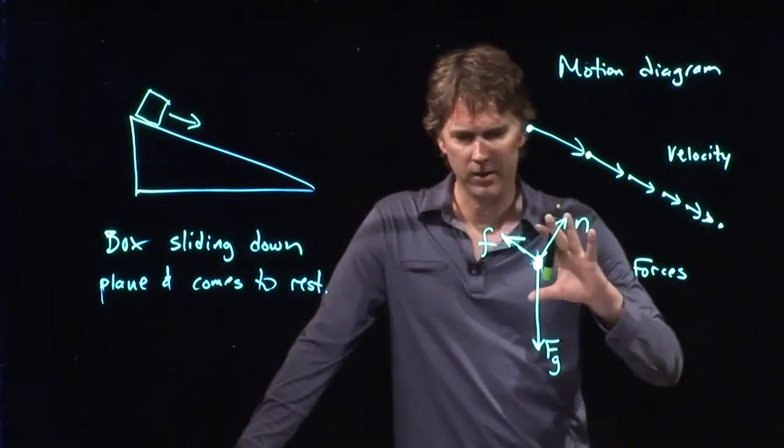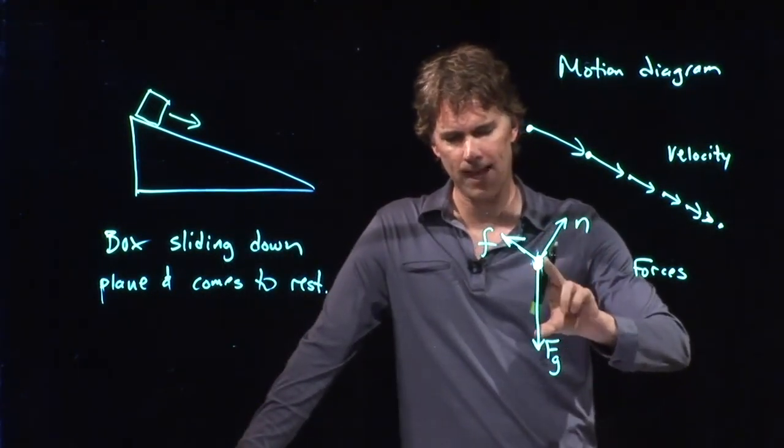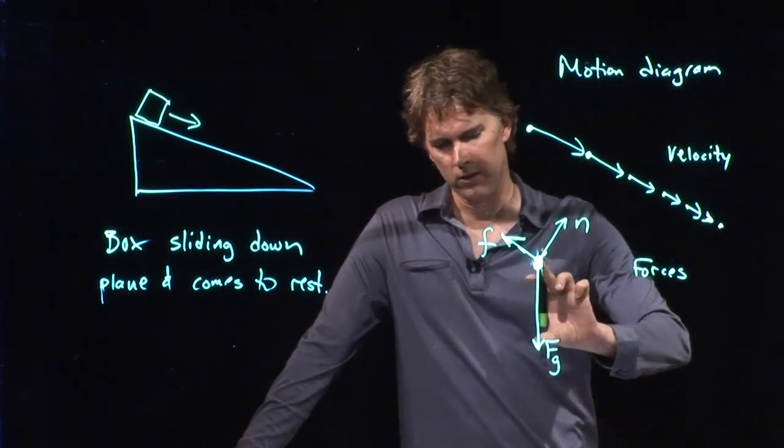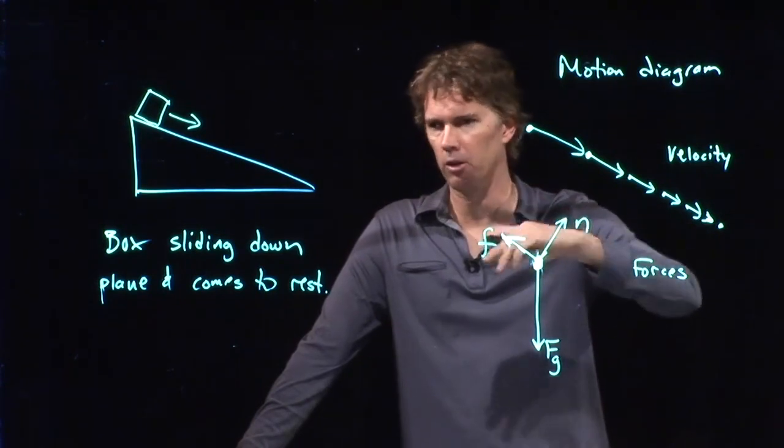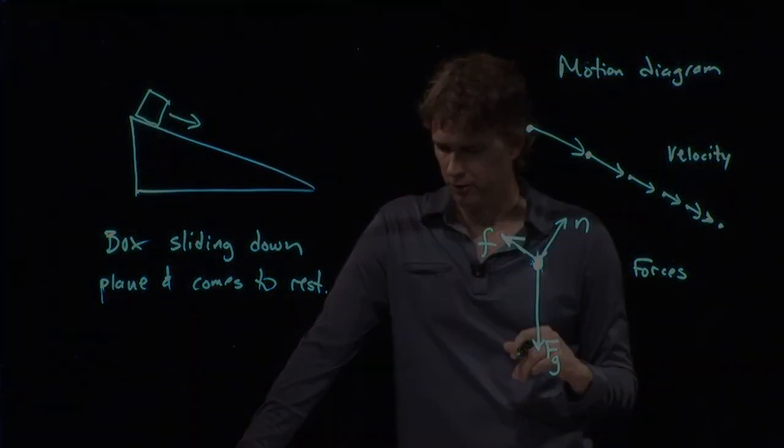So I would say that this is roughly the right lengths of vectors. Gravity is that big. Normal force is a little bit smaller than it. Friction is a little bit smaller than the normal force.